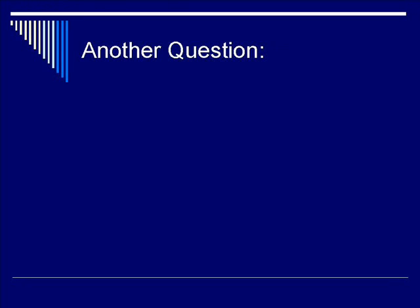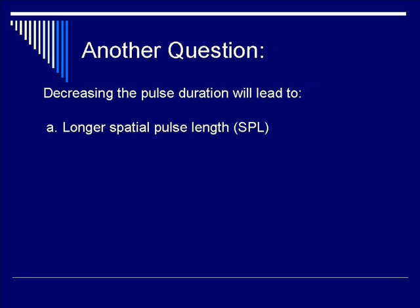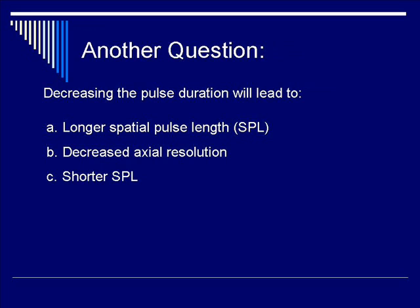Before we move on to lateral resolution, let's do another question on axial resolution. Decreasing the pulse duration will lead to what? Is it A, longer spatial pulse length or SPL? Is it B, decreased axial resolution? Is it C, shorter SPL? Or is it D, no change in SPL?